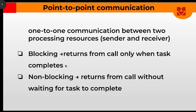Point-to-point communication refers to a one-to-one communication between two processing resources — the sender and the receiver. One processing resource is sending, another is receiving. Point-to-point is one-to-one: one person is sending, one person is receiving. Two processors are always involved in this communication.